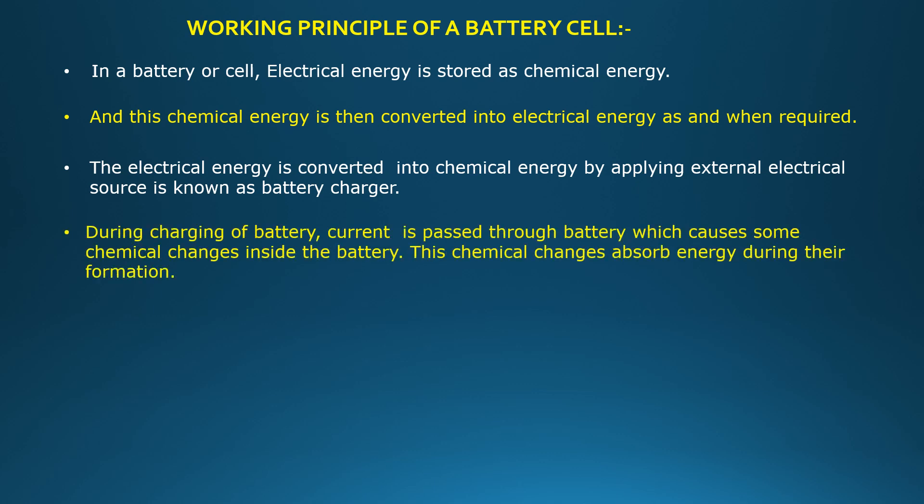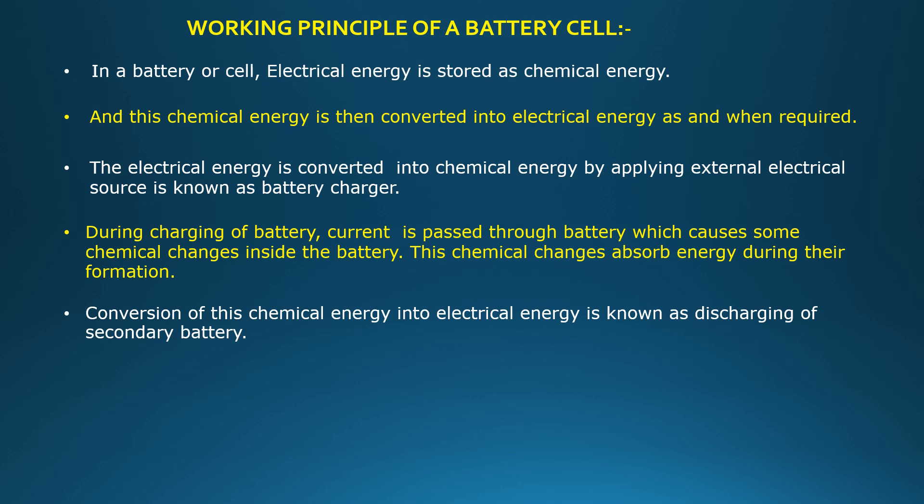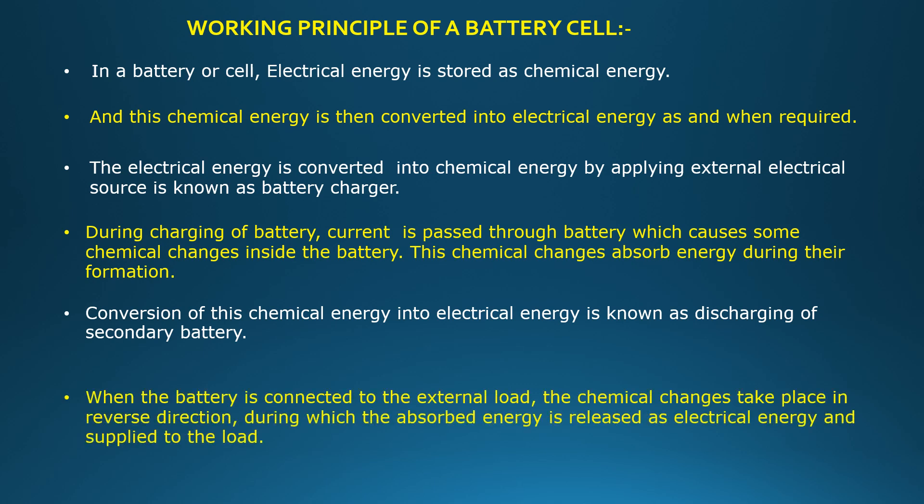During charging of a battery, current is passed through the battery which causes some chemical changes inside the battery. These chemical changes absorb energy during their formation. Conversion of this chemical energy into electrical energy is known as discharging of secondary batteries. When the battery is connected to the external load, the chemical changes take place in reverse direction, during which the absorbed energy is released as electrical energy and supplied to the load.